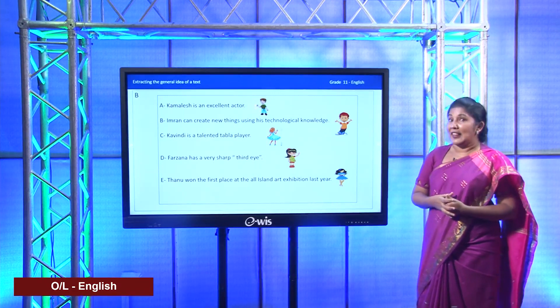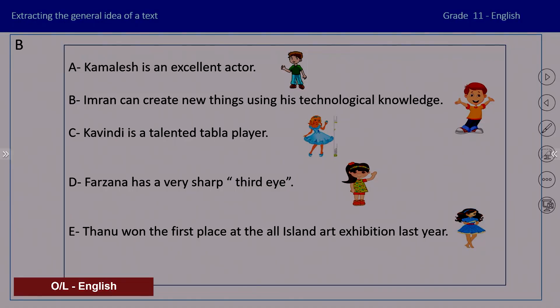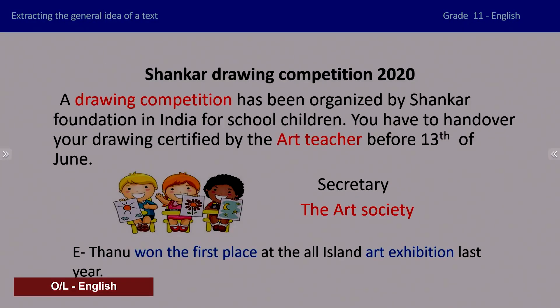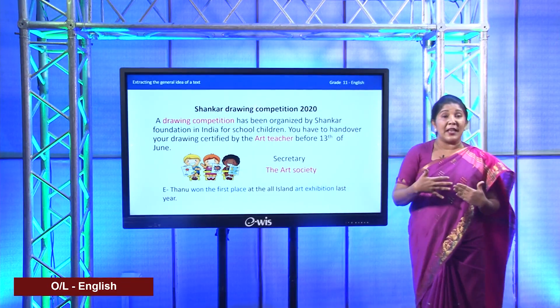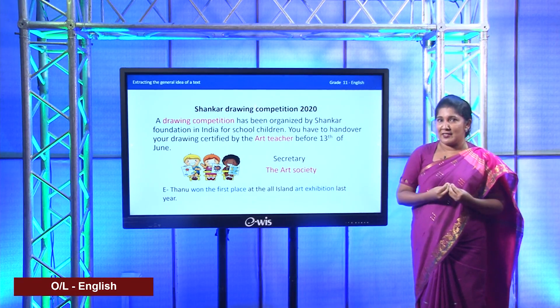So let's see the next notice and who is capable of it. I told you about some words that will really help you to find the answer - it's about the drawing competition and the art society. You had the answer: the child won the first place for art exhibition. You see how well the notice, the title, and the person who can apply for it all suit together. There are little tactics that you can use to match.